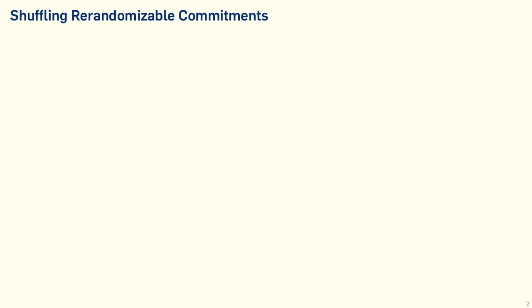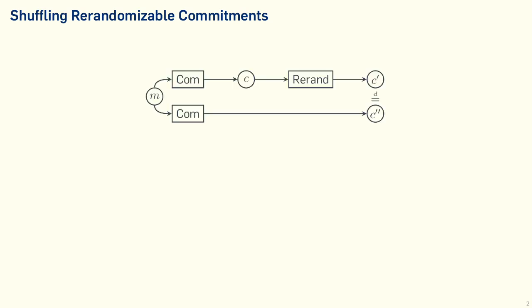In this talk, I will be talking about shuffling re-randomizable commitments. What do I mean by re-randomizable commitments? Normally when you think of commitments, you think of binding and hiding. Those properties are not important for our definitions or our construction. We need perfect re-randomizability, which means that if we have a message and we commit to it resulting in a commitment C, and we re-randomize this commitment C to C', the distribution is identical to just re-committing with fresh randomness to the same message M.